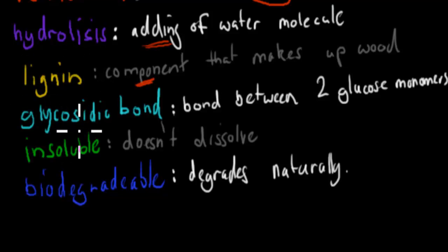We've got a glycosidic bond. This was a bond between two glucose molecules. So if you have a beta glycosidic bond, that makes two glucose monomers into a polymer, eventually, such as cellulose or lignin, these are examples of this.